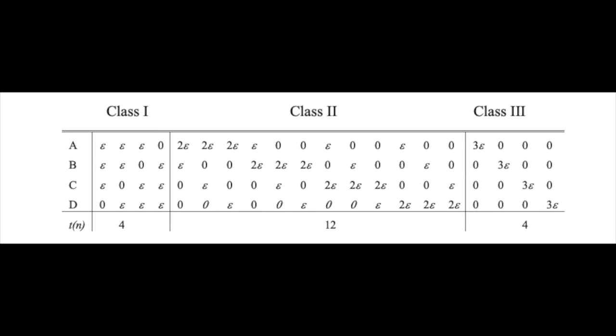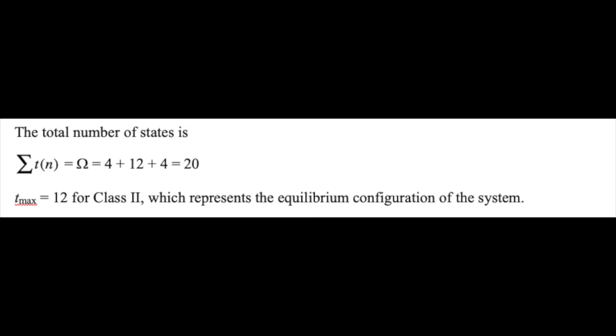Counting all these permutations, there are four ways to construct class one, twelve ways to construct class two, and four ways to construct class three. The total number of states is twenty, the sum of those three numbers, and T_max is twelve for class two, which identifies it as the equilibrium configuration of the system.